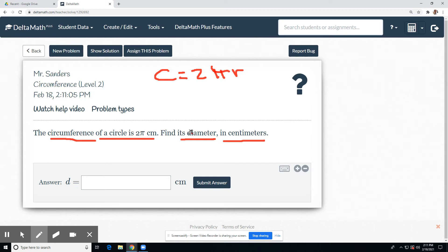And find its diameter. So the circumference is 2 pi. We have to find the radius first, then we'll find the diameter. The circumference is 2 pi. I replace C with 2 pi.